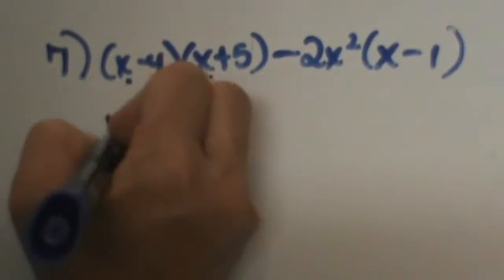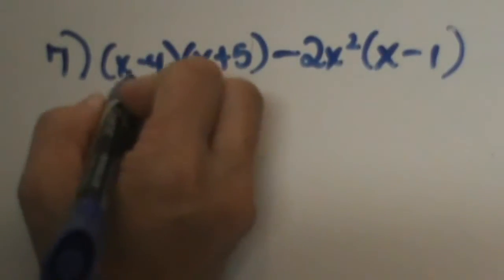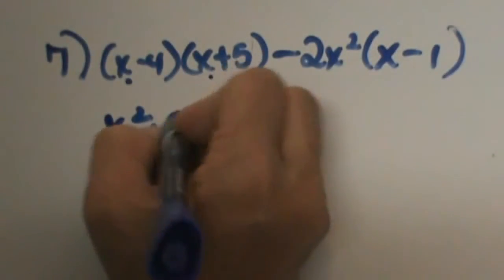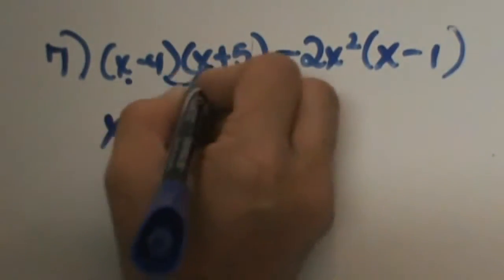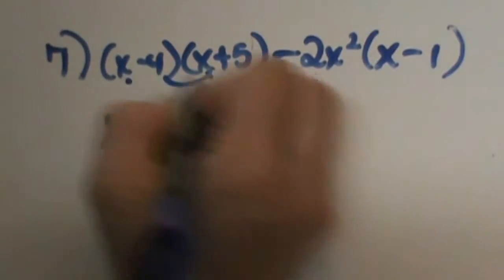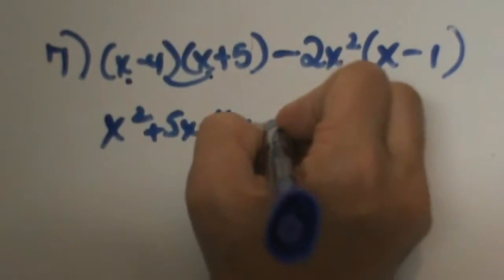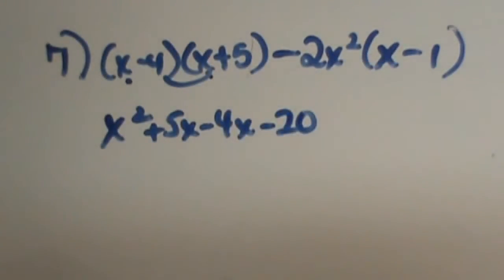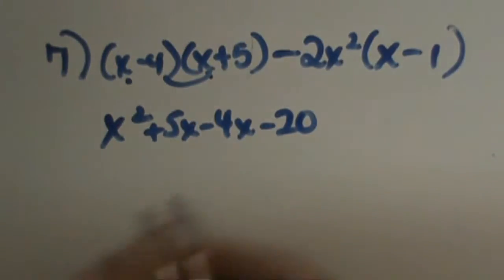FOILing (x-4)(x+5): x times x is x squared. Outer is positive 5x. Inner is negative 4x. Last is negative 20. So there is the first part.